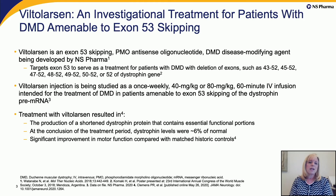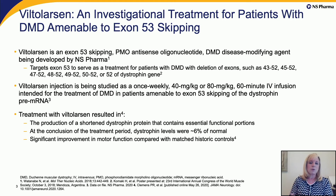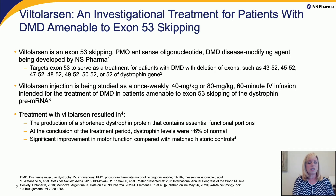Viltolarsen is an investigational compound being developed to treat patients with DMD who are amenable to exon 53 skipping. A number of different exon deletions can make a patient amenable to exon 53 skipping — for example, deletions of exons 43 to 52, 45 to 52, and others. Viltolarsen has been studied as a once-weekly 60-minute IV infusion at two doses: 40 mg per kg per week and 80 mg per kg per week. Our studies demonstrated production of a shortened dystrophin protein, with levels achieved averaging approximately 6% of normal, and significant improvement in motor function versus a matched historical control group.